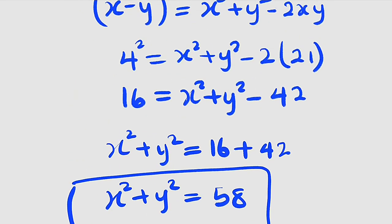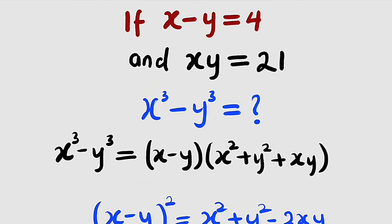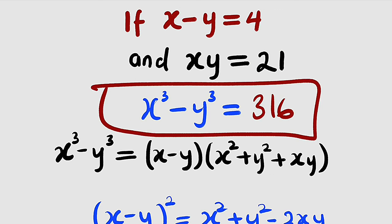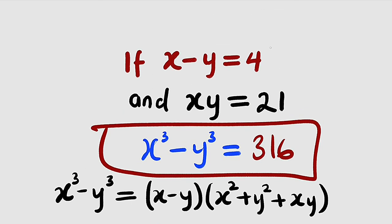Which implies that the whole of this that we're looking for is 316. It's 316 provided that x minus y is 4 and xy equal to 21.